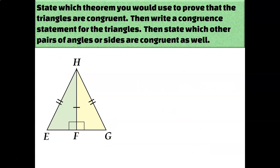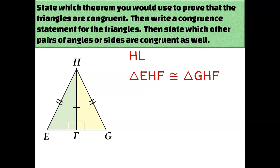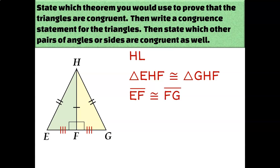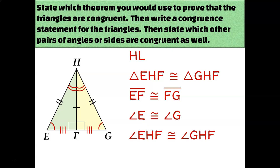In our next example, can I prove these two triangles are congruent? Yes — since they're right triangles whose hypotenuses are congruent and they share a leg, those legs have to be congruent, so I can use HL to say that triangle EHF is congruent to triangle GHF. EHF goes in the same corresponding order as GHF. Then I can state all pairs of corresponding parts: EF is congruent to FG, angle E is congruent to angle G, and angle EHF is congruent to angle GHF.